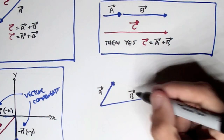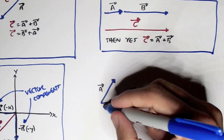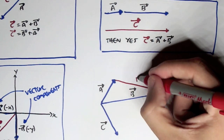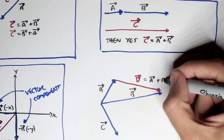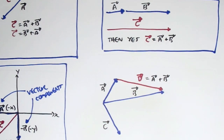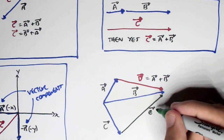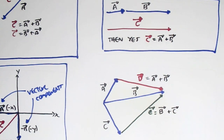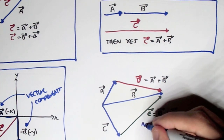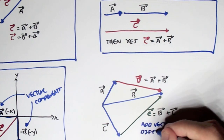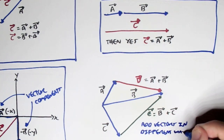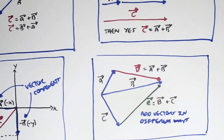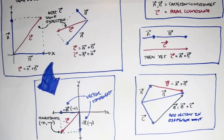If we have displacements a, b, and c, we can write d displacement equals a plus b, or e displacement equals b plus c. We can add vectors in all sorts of different ways — that's the amazing part. The vectors just have to be travelling in compatible directions. And that was it for vector addition.